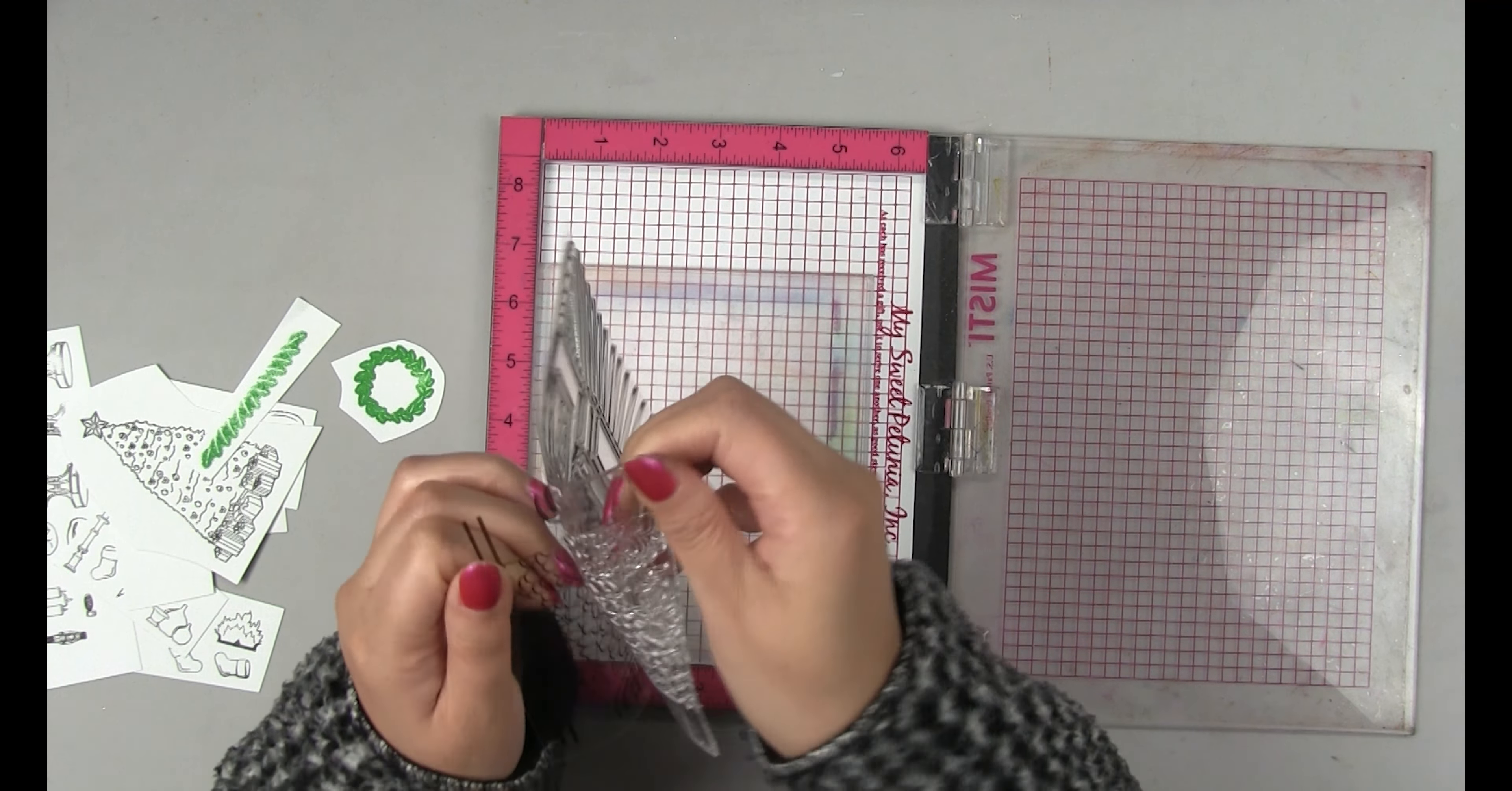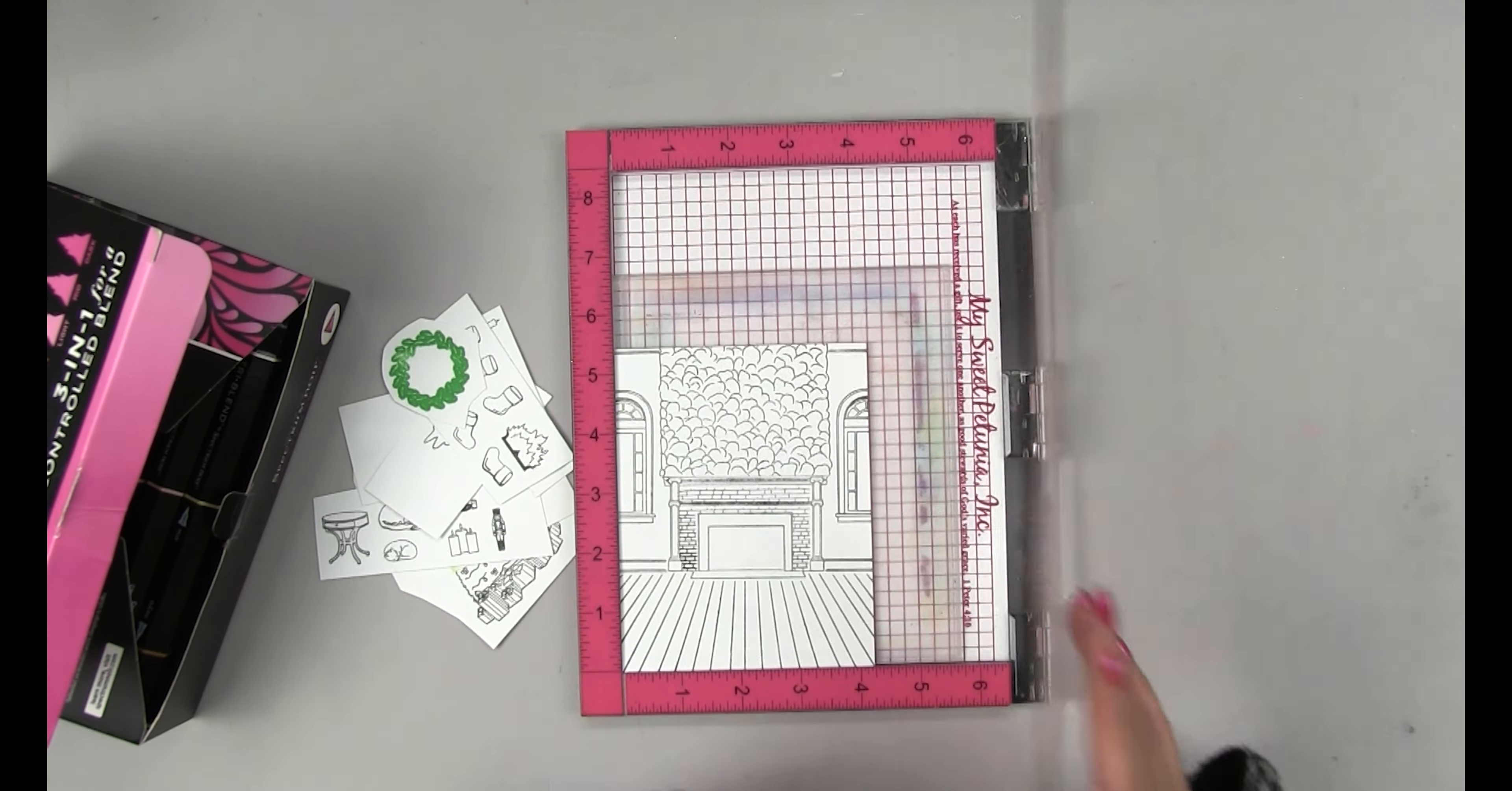And then I took the texture stamp from our original fireplace holiday stamp. So this actually coordinates with that background stamp. So it's the texture for the fireplace. I positioned that onto my panel and stamped that with our caviar ink.